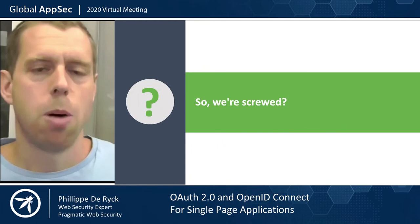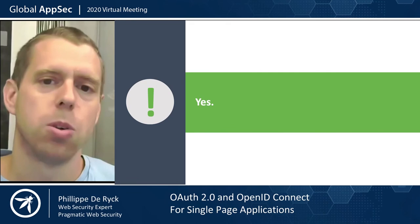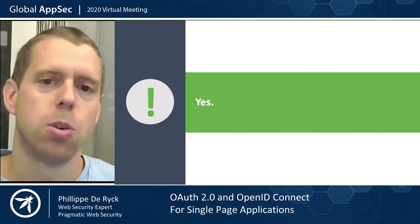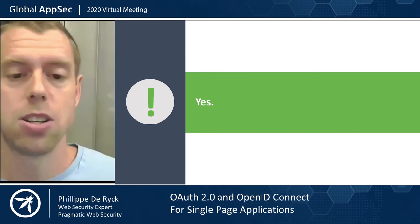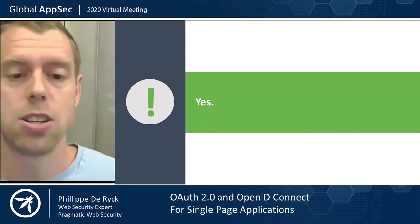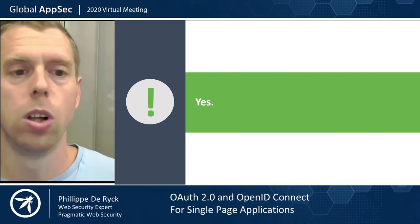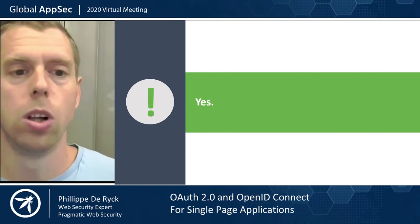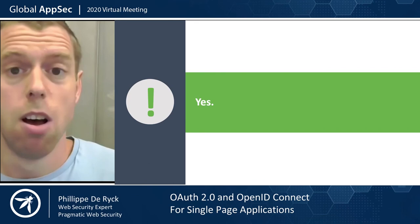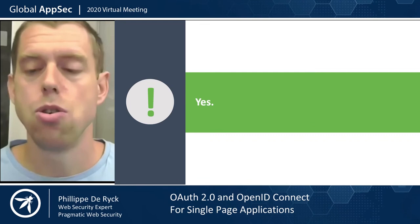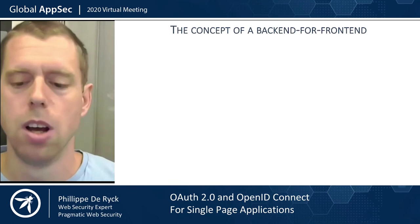Tokens in the browser are virtually impossible to secure — that's something you have to live with. If you have tokens in a browser-based application and malicious JavaScript is executing there, tokens will be extracted. So what do you do for sensitive applications? My advice is not to store tokens in the browser. Instead, use a concept we call a backend for frontend, or BFF. I'm going to introduce this concept to explain what it does conceptually, and then wrap up this session.